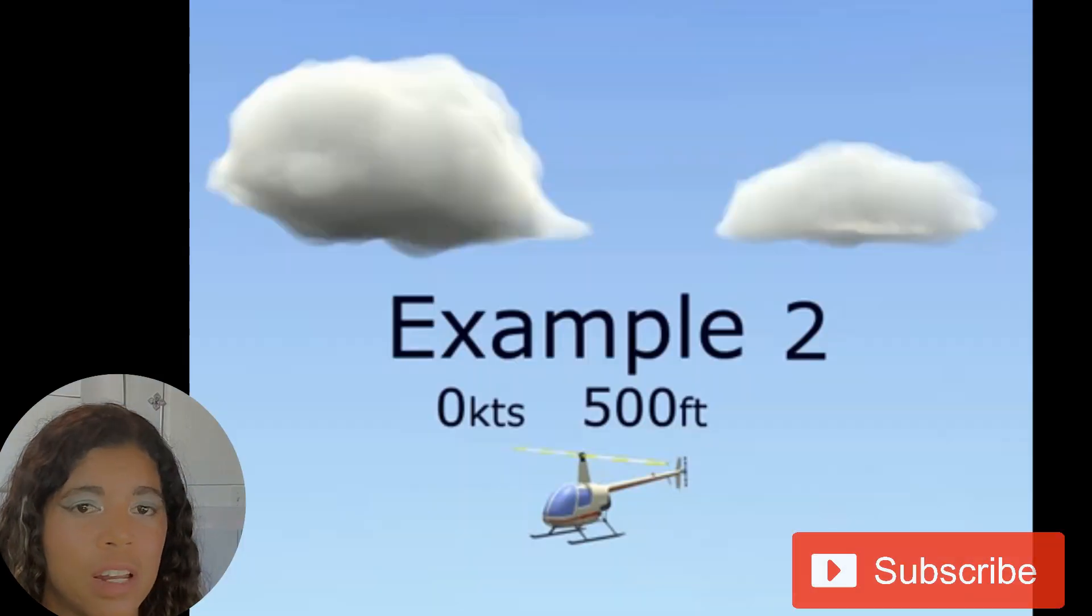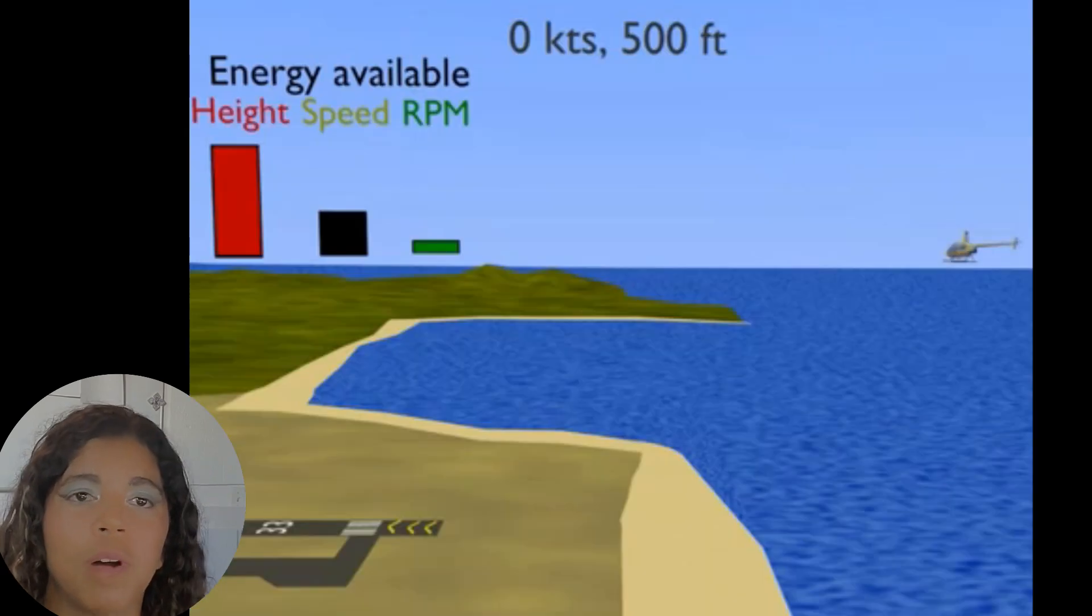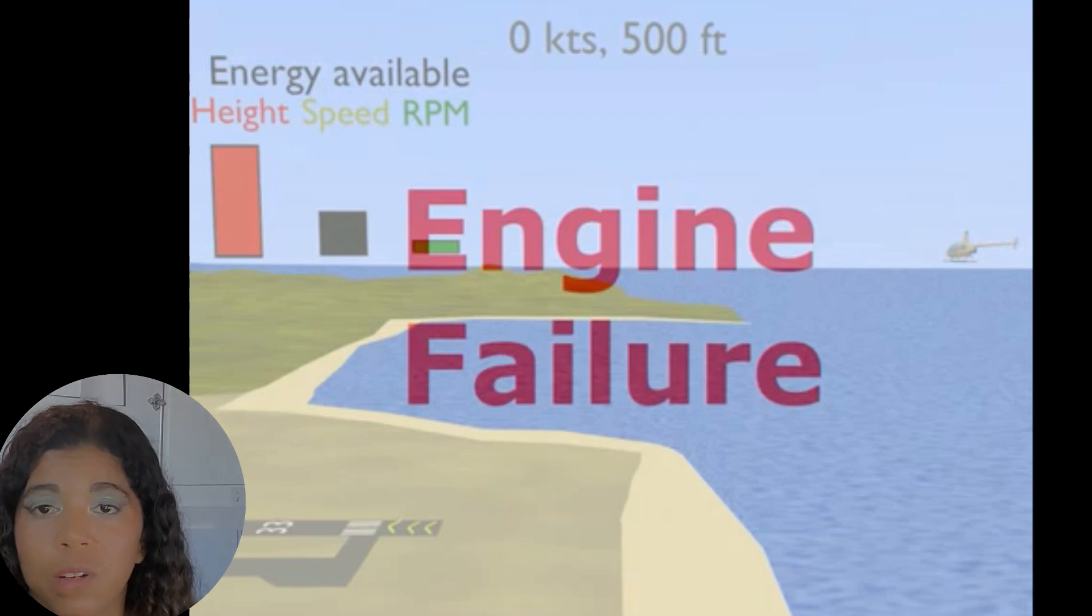Now let's take a look at another example: zero knots and 500 feet. So let me pause this for a moment. In this case we have that same amount of energy due to our height again. However we do not have the speed that we used in the last example that allowed us to have a soft landing at the end.